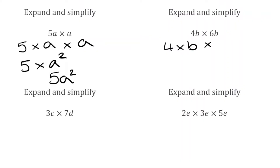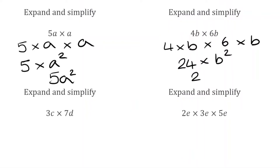For the next question we've got 4b times 6b. 4b means 4 multiplied by b, and 6b means 6 multiplied by b. Combining the numbers: 4 multiplied by 6 is 24. For the letters: b multiplied by b is b squared, or b to the power of 2. So we've got 24 times b squared, and hiding the multiplication sign gives us 24b squared.